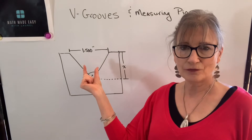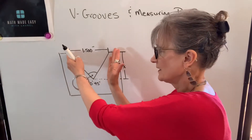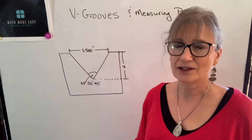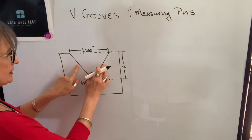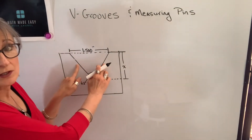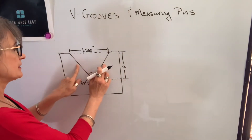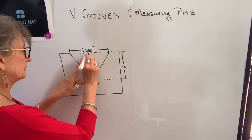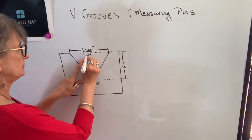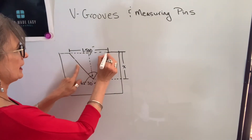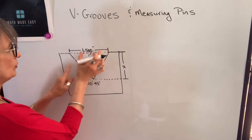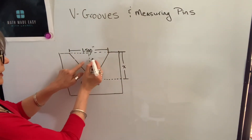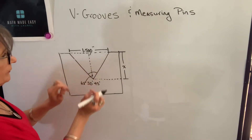This is the symmetrical V-groove, which means that this length will be the same as this length. This angle will be the same as this angle. Because this side is equal to this side, that's called an isosceles triangle, and that means that we are able to bisect this angle. It will form a right angle with this side, and this length will be equivalent to this length. So now I have two right triangles — I only need one of them.